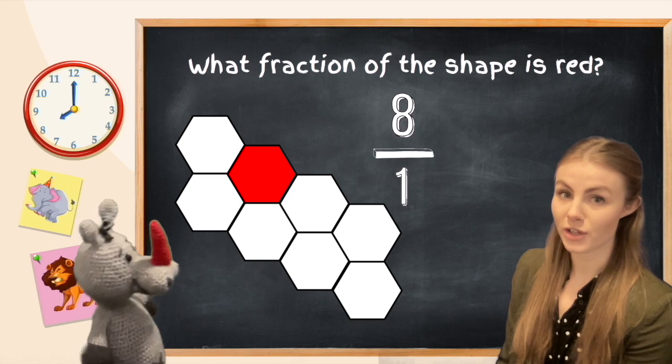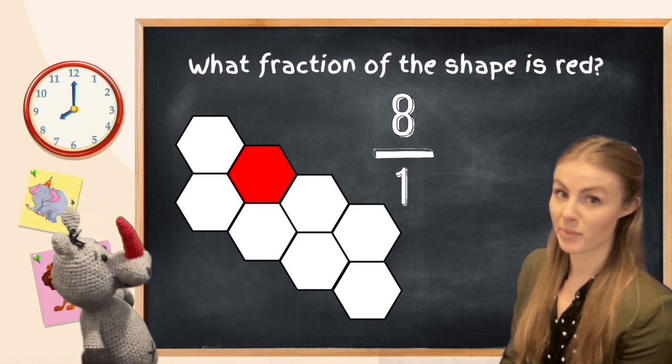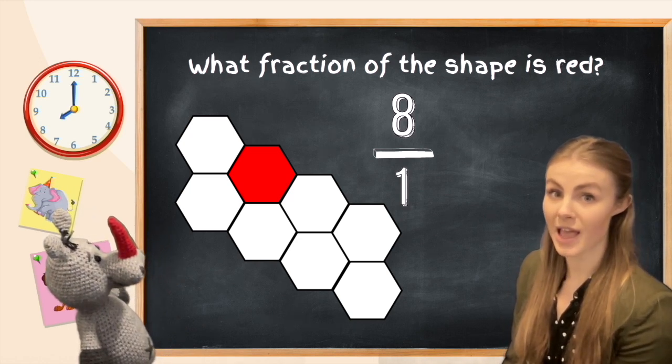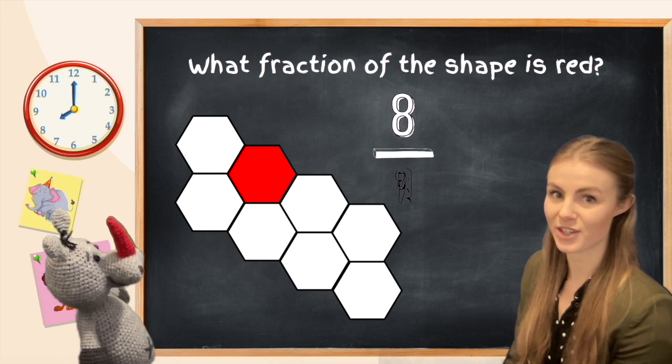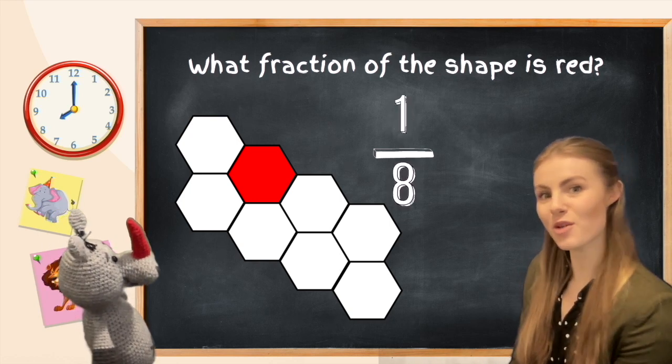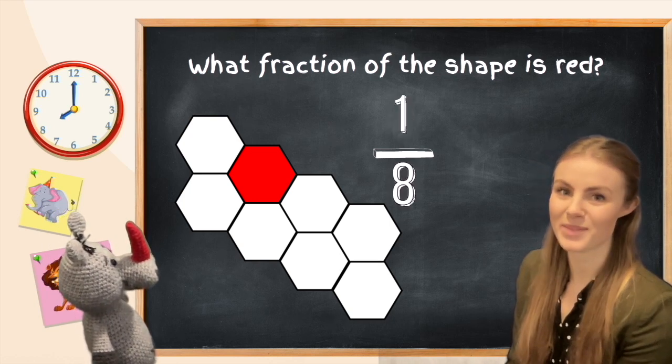So what we need to do is put eight as our bottom number, because it's our bottom number that tells us how many parts the whole has been split into, and then put our one as our top number because it's the one part that has been colored in.